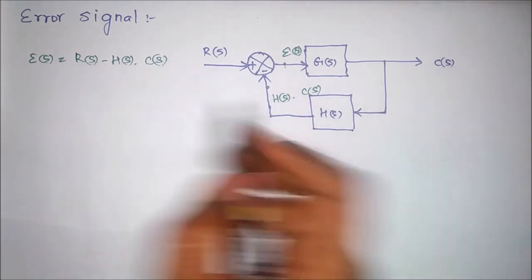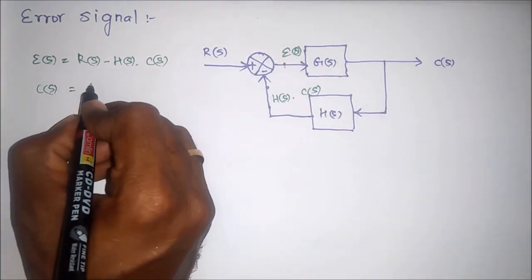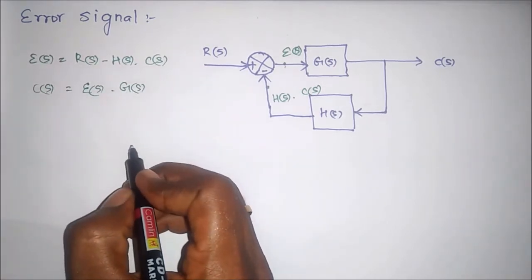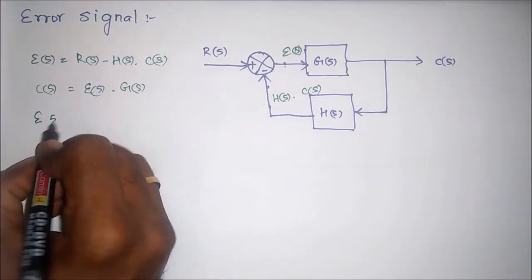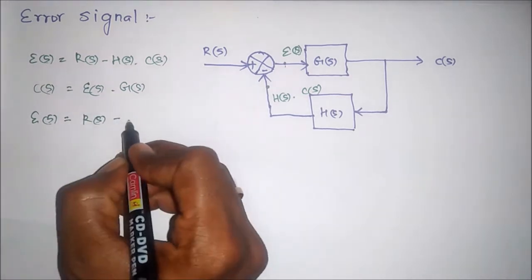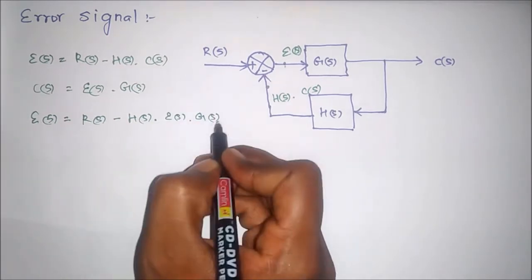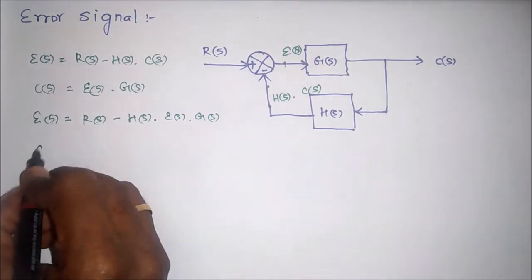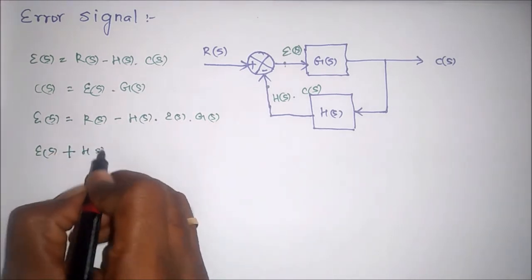Now we have to substitute C(s) into this equation. We know that C(s) equals G(s) into E(s). So now we have to substitute this into G(s) and bring the error terms to the left hand side. We will get E(s) plus E(s) into H(s) into G(s) equals R(s).